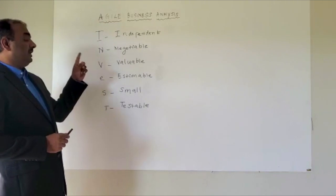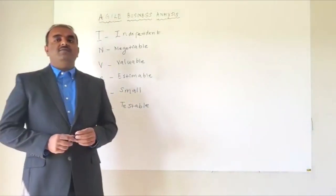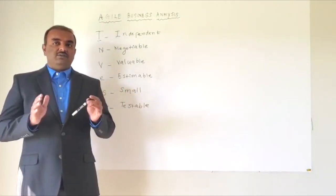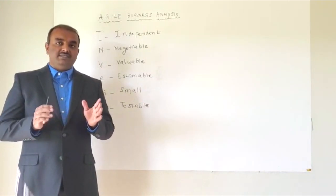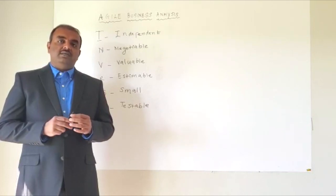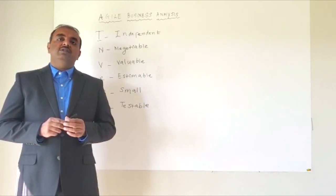Let's take the first attribute, Independent. Every time when you want to have a user story, please make sure that the story is independent and does not have any dependency with some other story. The reason behind this is when you have dependencies, it's going to be very difficult for the project management or development team to prioritize those stories.